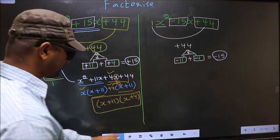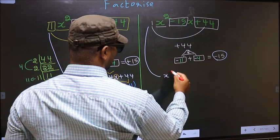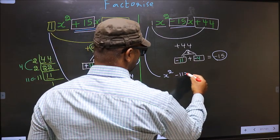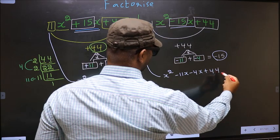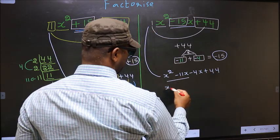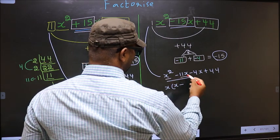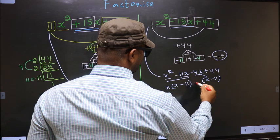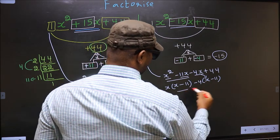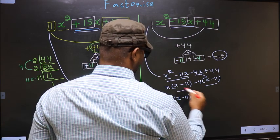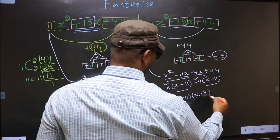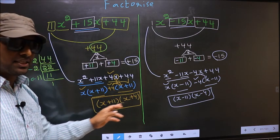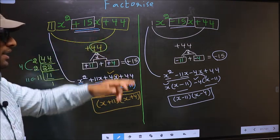Now for x² - 15x + 44, in place of minus 15x we write minus 11x minus 4x plus 44. From the first two terms, take x common: x(x - 11). From the last two terms, take minus 4 out: minus 4(x - 11). Now take out (x - 11) common, giving (x - 11)(x - 4). This is the answer. Did you understand the difference between the two?